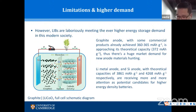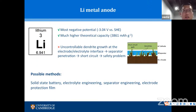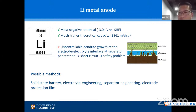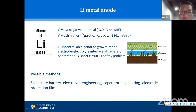The lithium metal anode has the most negative potential. The more negative the potential, the more reactive the ion, which means the reaction is very easy to happen — unlike a silver anode, which would be very difficult to react. Additionally, lithium metal anode has a much higher theoretical capacity than the current graphite anode.